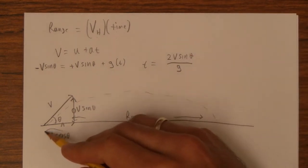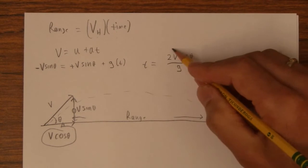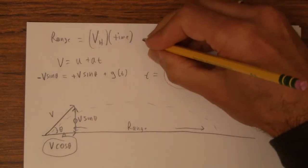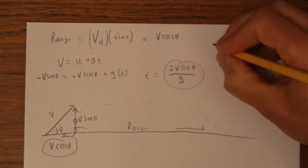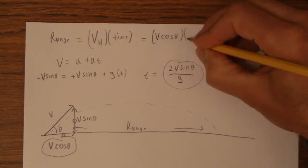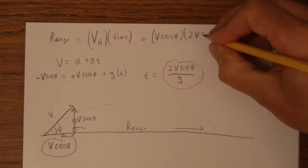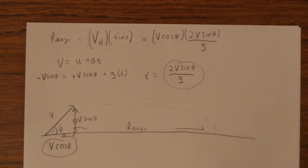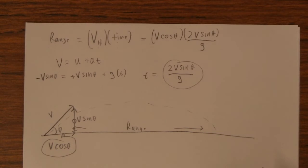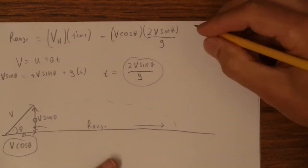So now we're set. We'll plug this in for the horizontal velocity, this in for the time, and we get V cos theta times 2V sin theta over g. Now we can mess with this a little bit.